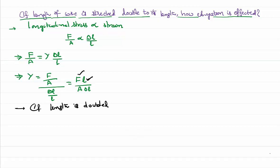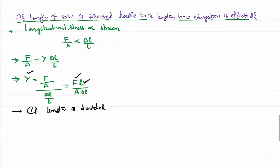So you have applied some force. Its length is doubled. Because you have doubled the length, Y is not going to be affected because Y is a measure of nature of the material. It depends on the nature of the material. As the material remains same, Young's modulus remains the same.